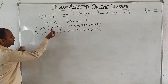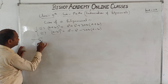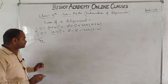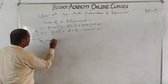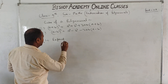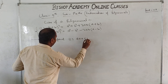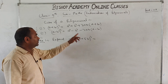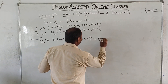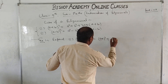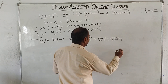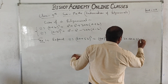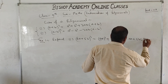Some examples related to these identities. Example number 1, first part: expand 4A plus 5B whole cube. This is a direct formula application. Using A plus B whole cube: A cube, that is 4A whole cube, plus B cube, that is 5B whole cube, plus 3AB, so 3 times 4A into 5B, in bracket A plus B, that is 4A plus 5B.